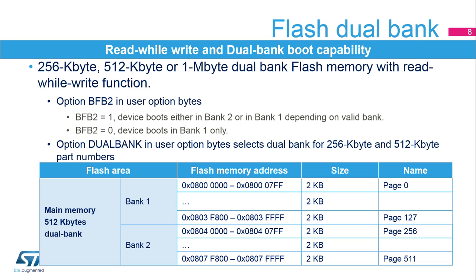The BFB2 option in the user option bytes is used to select the dual-bank boot mode. When the BFB2 option is set, the device boots in either bank 1 or bank 2, depending on the valid bank. When the BFB2 option is cleared, the device always boots from bank 1.